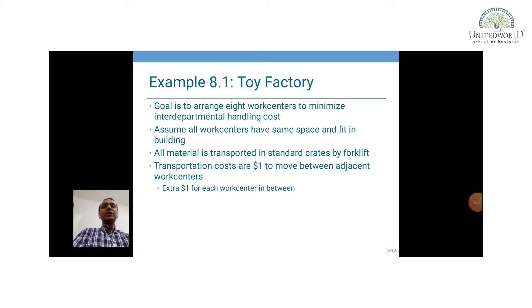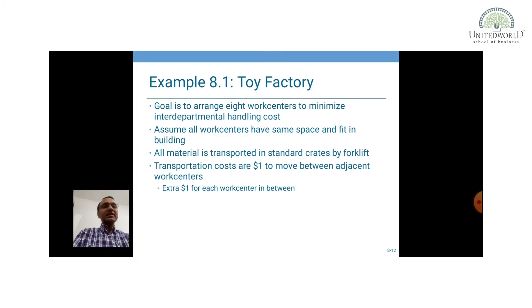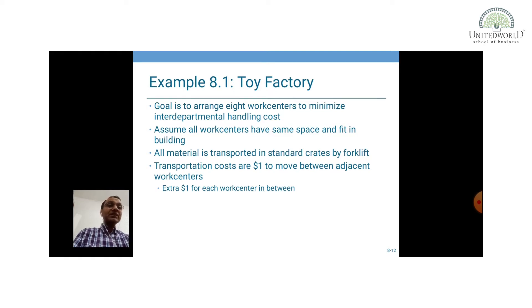Now we are going to look into an example of a toy factory. Suppose you wanted to arrange 8 work centres — the goal is to arrange 8 work centres to minimise interdepartmental handling cost. Assume all the work centres have the same space and fit in a building that is 40 feet by 40 feet, and the building is 80 feet by 160 feet. All material is transported in standard crates by forklifts, and transportation cost is $1 to move between adjacent centres and an extra $1 for each work centre in between.